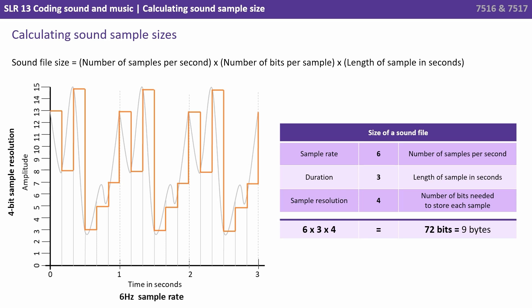So we have 6 times 3 times 4, 72 bits or 9 bytes.